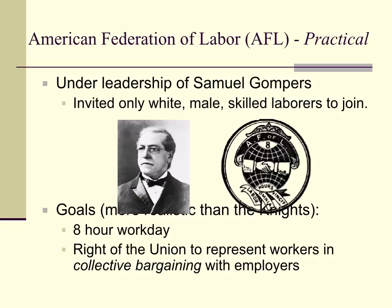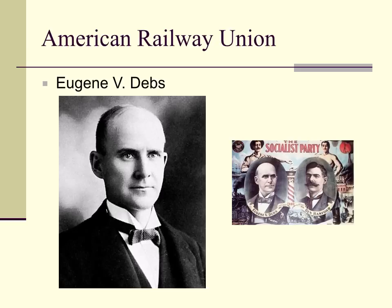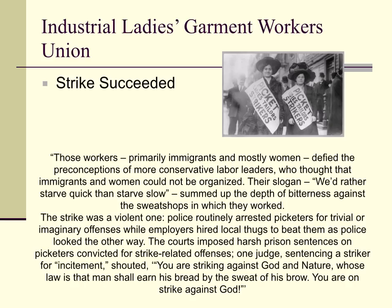Instead of each worker setting up their own individual agreement with employers, everyone would go through the union to represent all of them and get the best outcome for everybody. You also have the American Railway Union, led by Eugene V. Debs, which achieved progressive reforms for the railways. The Industrial Ladies Garment Workers Union had a strike, and it succeeded — they won better conditions in their garment factories.